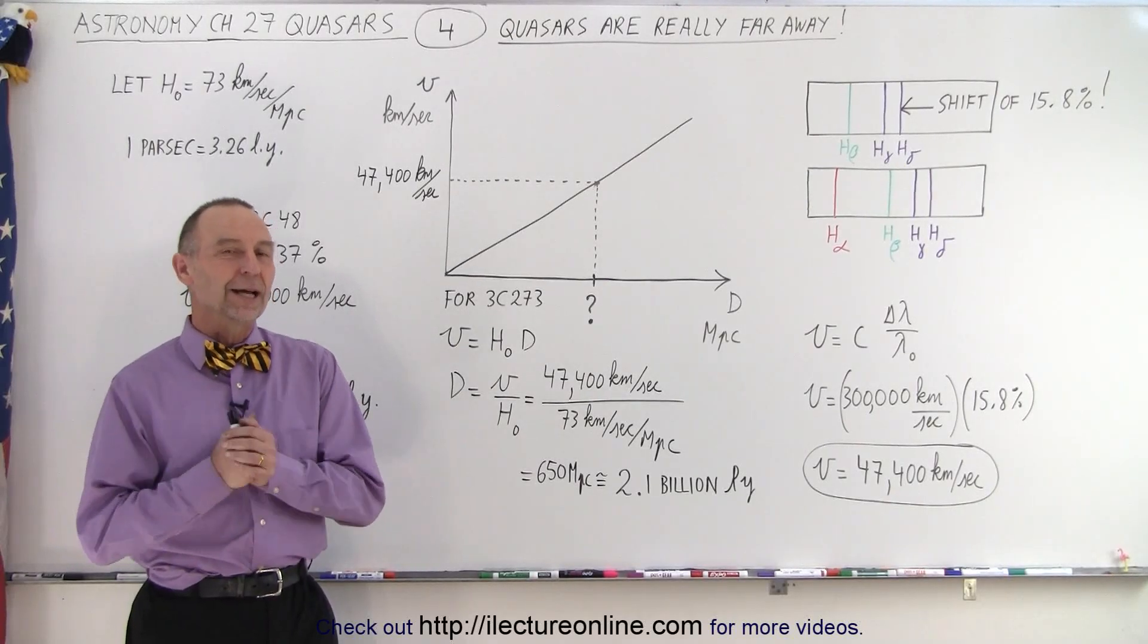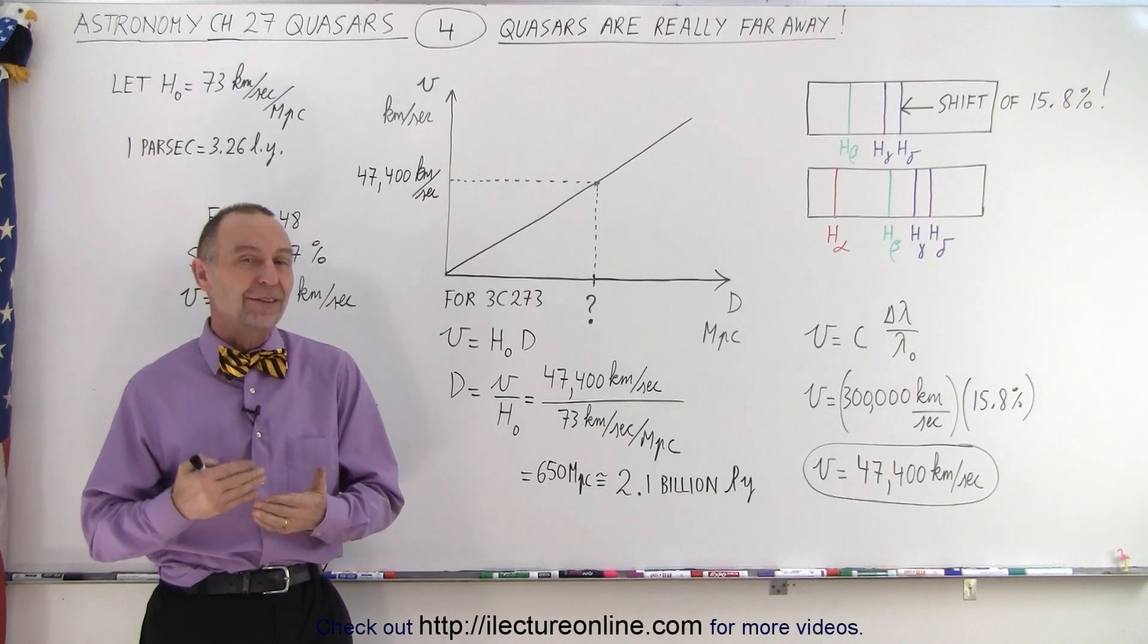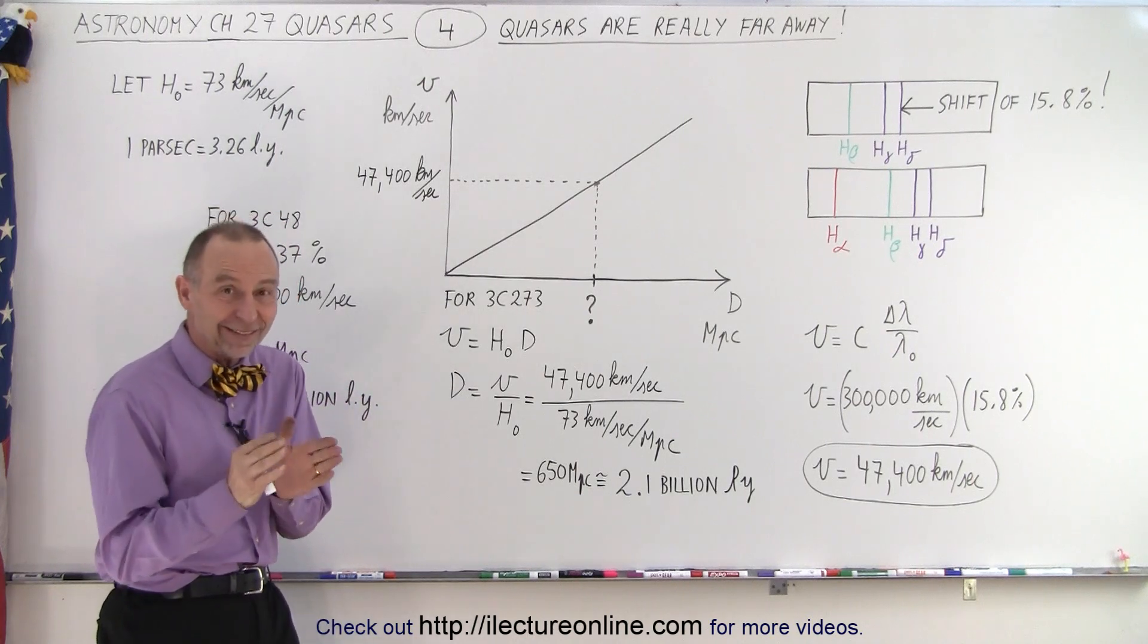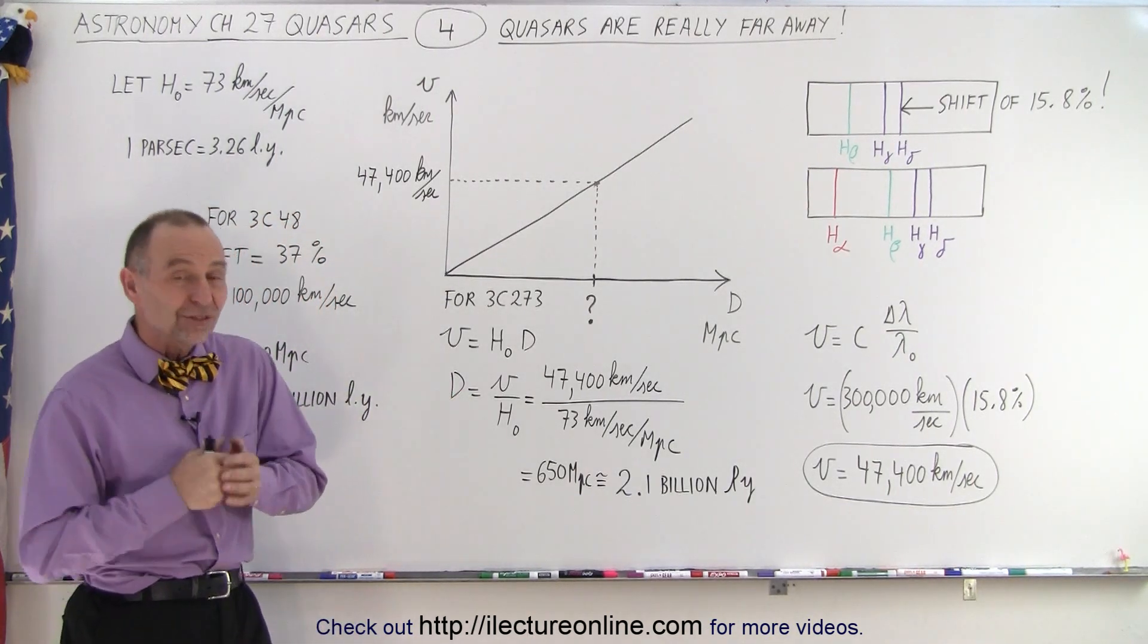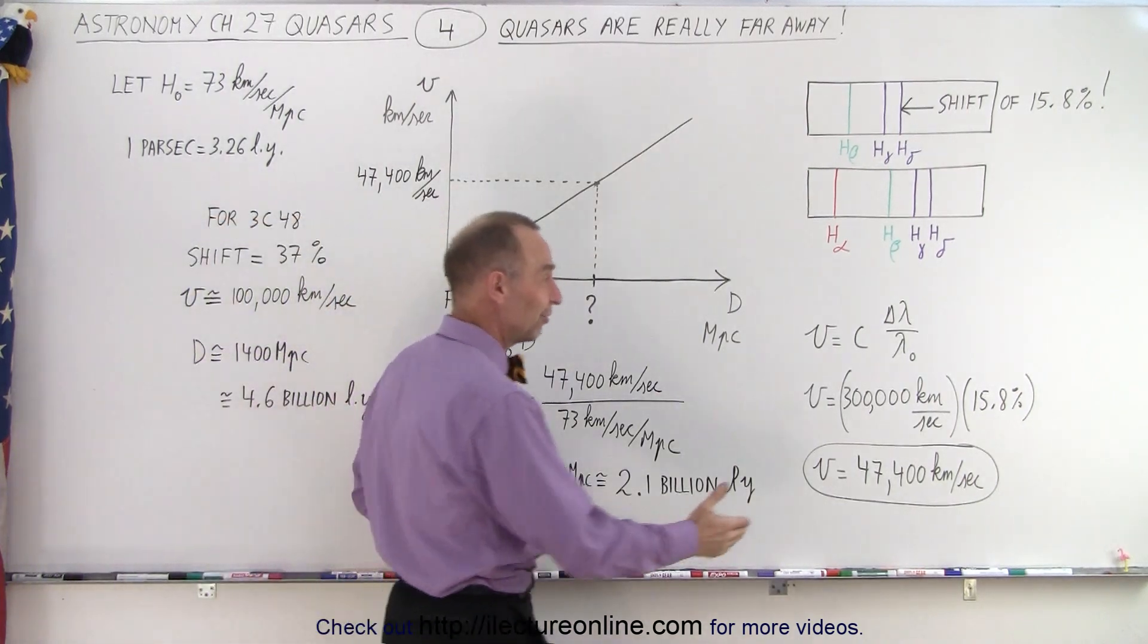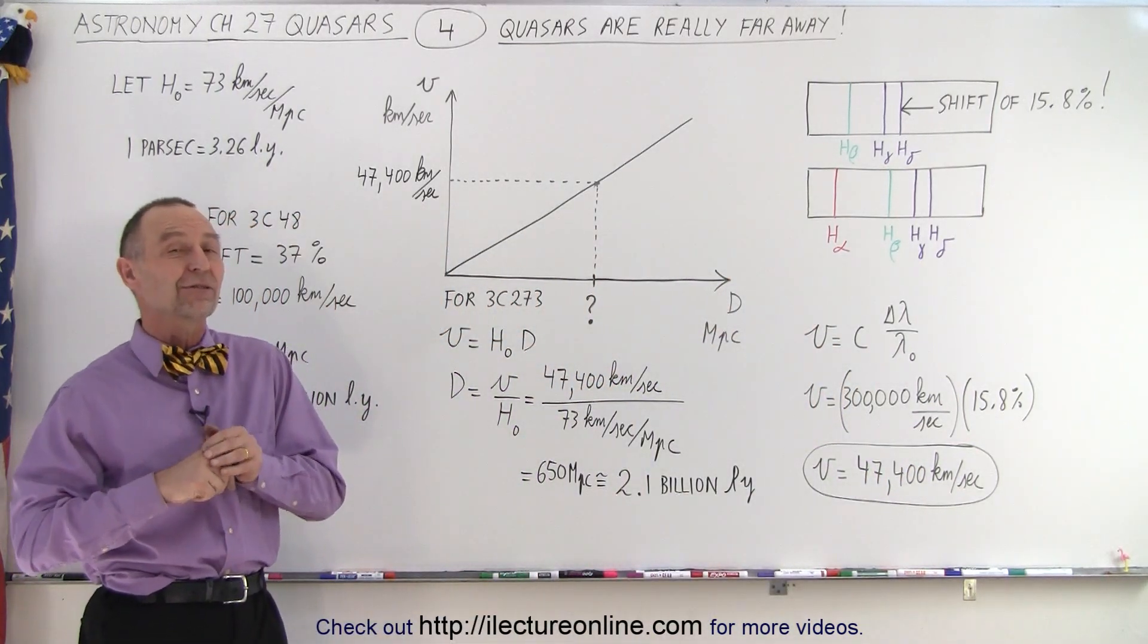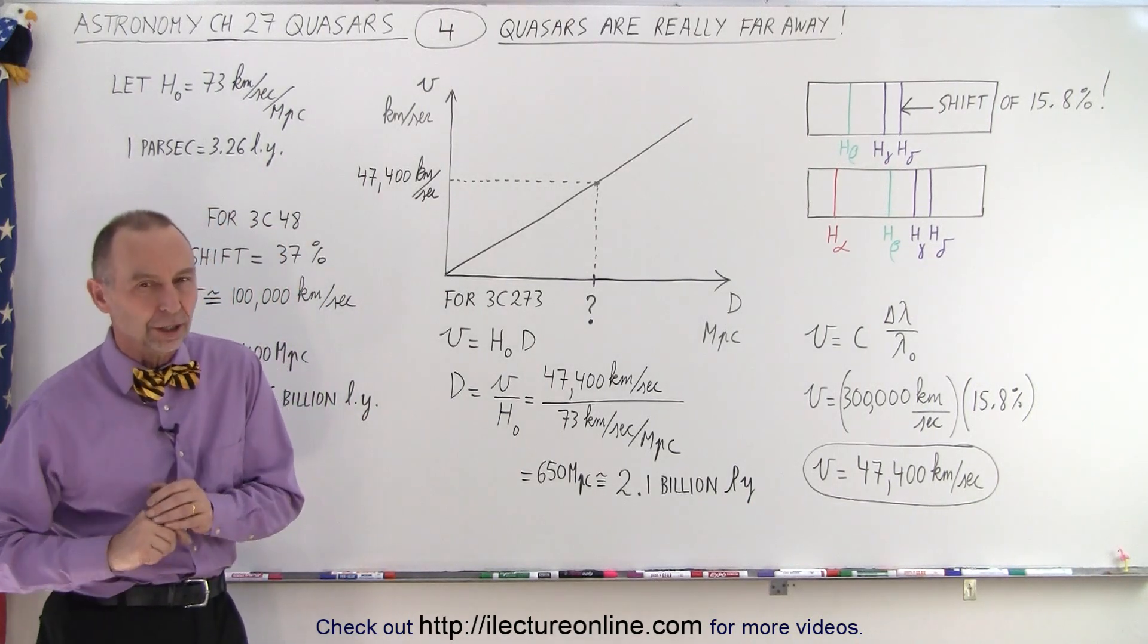Welcome to iLectureonline. As we saw in the previous video, they discovered that 3C273, the 273rd quasar placed in the 3rd Cambridge catalog, had a recession velocity that was absolutely phenomenal. The redshift was 15.8%, resulting in a speed of 47,400 kilometers per second as it was moving away from us. There's no way that could be a star.